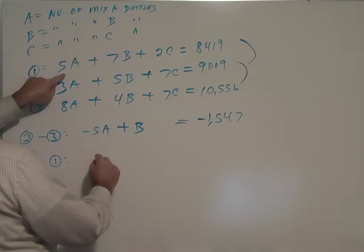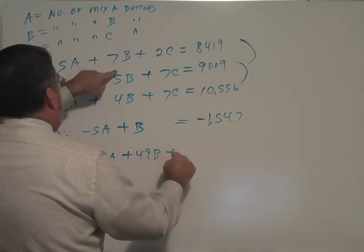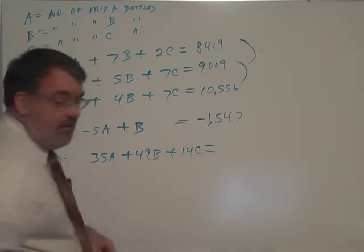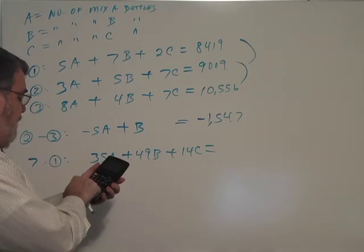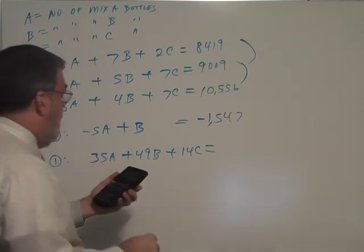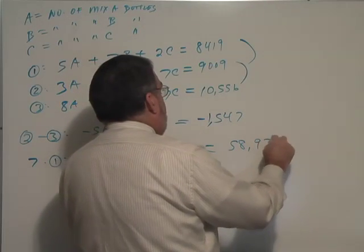This will be 35A plus 49B plus 14C equals to a large number. So 7 times 8,419 is 58,933.